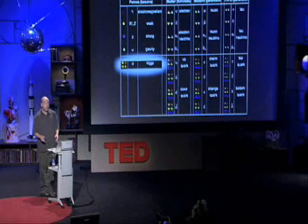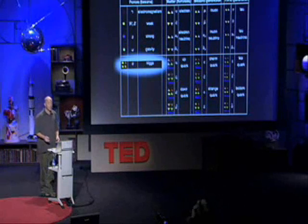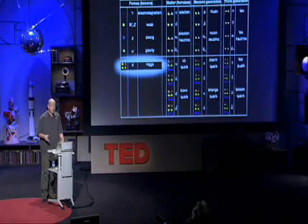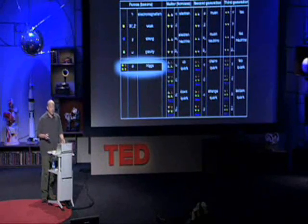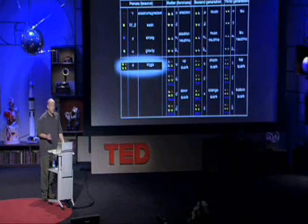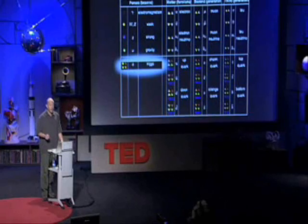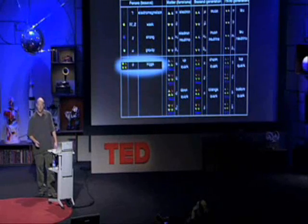A particle that hasn't been seen yet, but we're pretty sure exists, is the Higgs particle, which gives masses to all these other particles. The main purpose of the Large Hadron Collider is to see this Higgs particle, and we're almost certain it will. But the greatest mystery is what else we might see. And I'm going to show you one beautiful possibility towards the end of this talk.